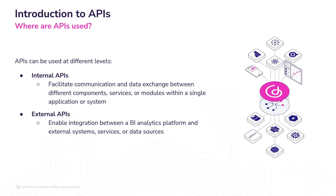APIs can be used at different levels to facilitate communication and data exchange between various components, applications, or services. Internal APIs do this within a single application or system, enabling modular architecture and allowing components to interact and share data seamlessly. For example, in a BI analytics platform, internal APIs can be used between data ingestion services, data transformation services, visualization modules, and reporting components. They promote flexibility, scalability, and loose coupling within the application.